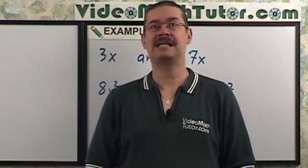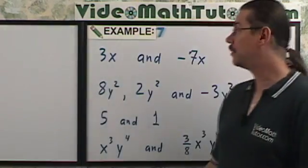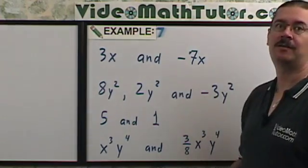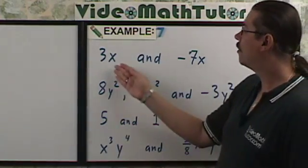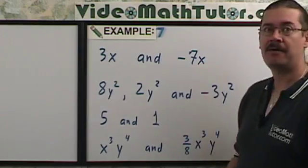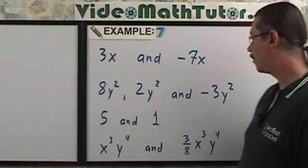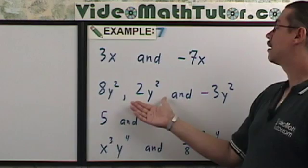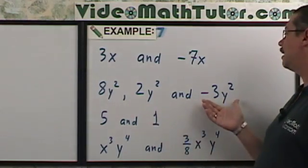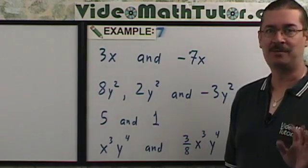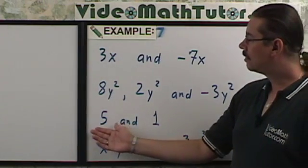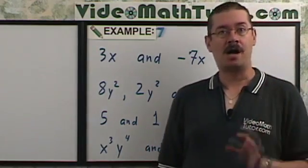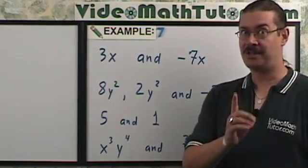Now, let's take a look at some examples of what are like terms and what are not like terms. For the first one, 3x and negative 7x are like terms. Why? Well, they're the same variable raised to the same power. The coefficients may be different. For the next example, 8y squared, 2y squared, and negative 3y squared are all like terms. What about 5 and 1? Well, it turns out constants are considered like terms. Good to know.